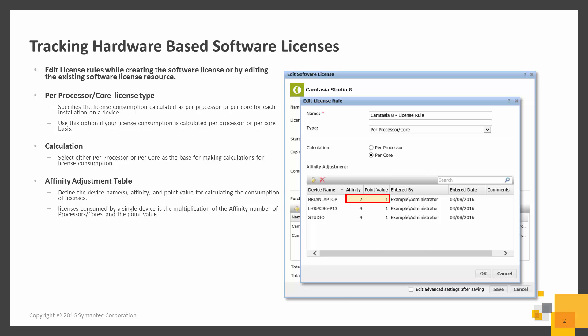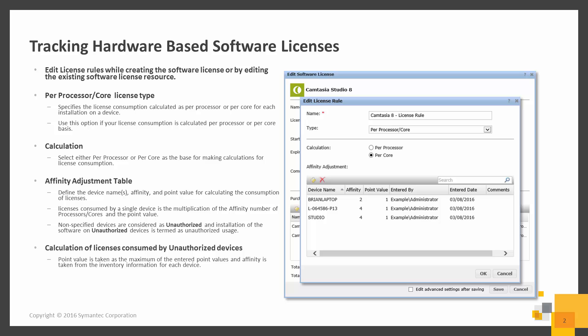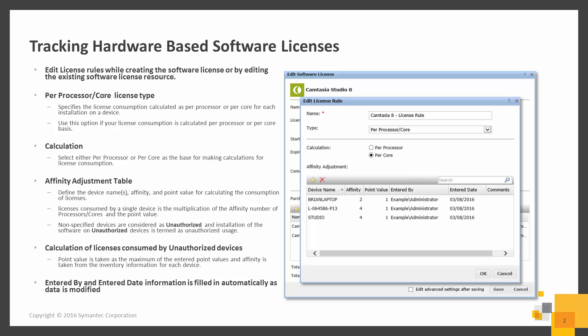Non-specified devices are considered as unauthorized, and installation of the software on unauthorized devices is termed as unauthorized usage. For the calculation of licenses consumed by unauthorized devices, the point value is taken as the maximum of the entered point values, and the affinity is taken from the inventory information for each device. As you make changes through the affinity table, the entered by and entered date information is filled in.